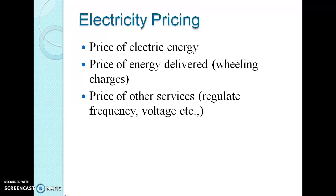Next, we will see how pricing takes place in the deregulated system. The electricity price gets segregated into: the price of electrical energy, the price of energy delivery, and the price of other services. The price of electrical energy is nothing but the cost incurred in generating the demanded power. Next is wheeling charges — that is, the cost for transmitting and distributing the claimed power. And the last one is the cost of a compensator used to regulate the power demand.